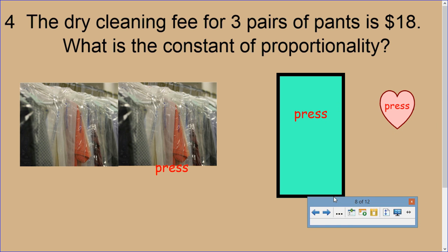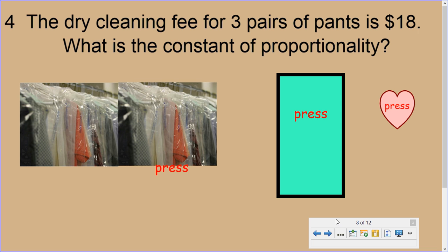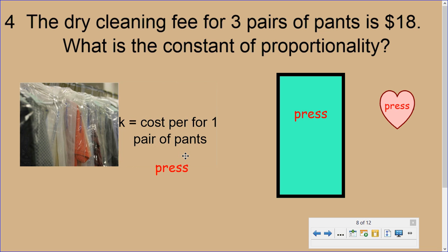So here's a nice example. The dry cleaning fee for three pairs of pants is $18. What is the constant of proportionality? Well, I see we have dry cleaning here, and we have three pairs of pants that are in there, and it costs us $18. So we're looking for the constant of proportionality. And if you remember, that word constant of proportionality also means unit rate. The unit rate is the cost of one of those pairs of pants we're interested in.